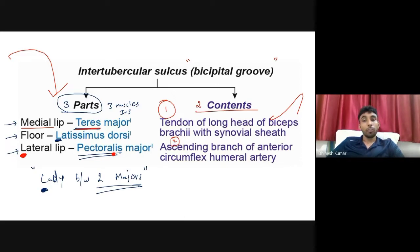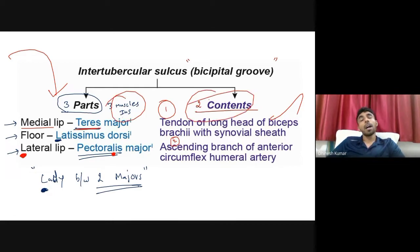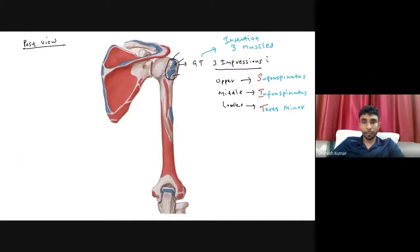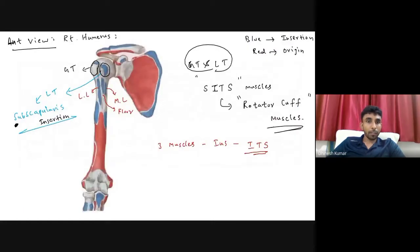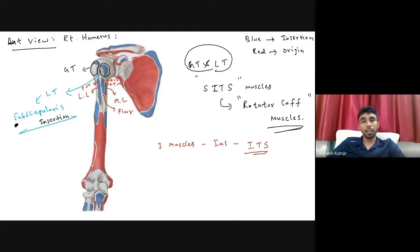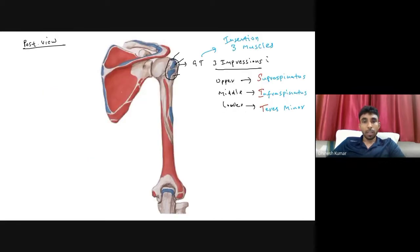The inter-tubercular sulcus, otherwise called the bicipital groove, has three muscles inserted into its three parts and two contents: the tendon of the long head of biceps brachii with its synovial sheath, and the ascending branch of the anterior circumflex humeral artery. Here we can see Pectoralis major, Teres major, and Latissimus dorsi insertions.